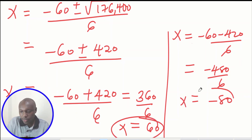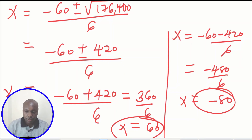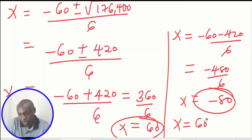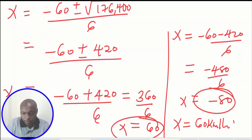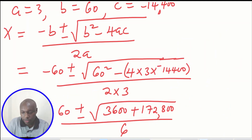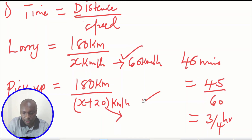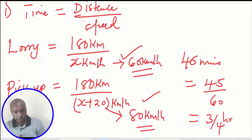With these two values of x, since we are dealing with speed, we are going to ignore the negative speed of negative 80 — that represents deceleration and does not apply in this question. So we consider the positive value: x is therefore 60 kilometers per hour, which is the speed of the lorry. For the pickup, the speed is x plus 20, and since x is 60, this gives 80 kilometers per hour. We have now obtained both speeds.